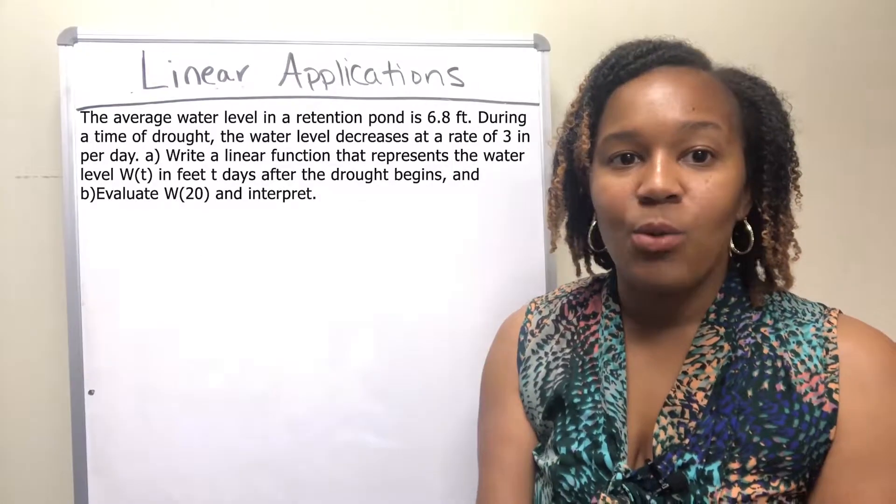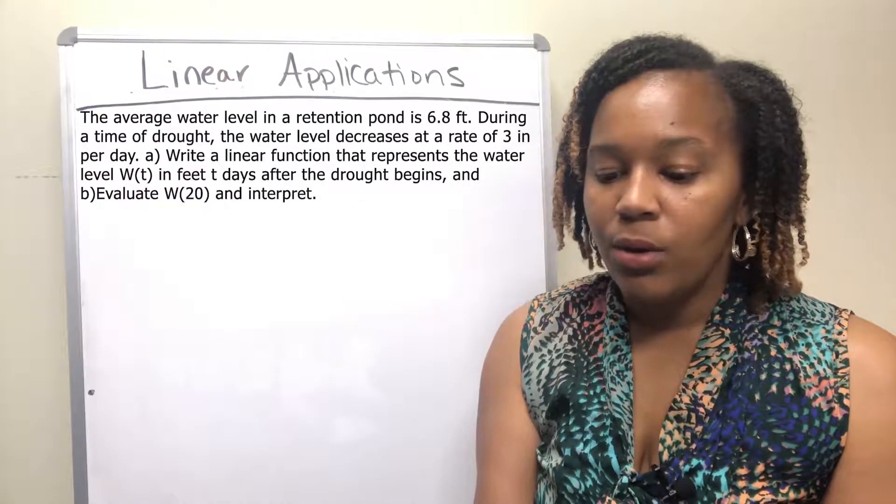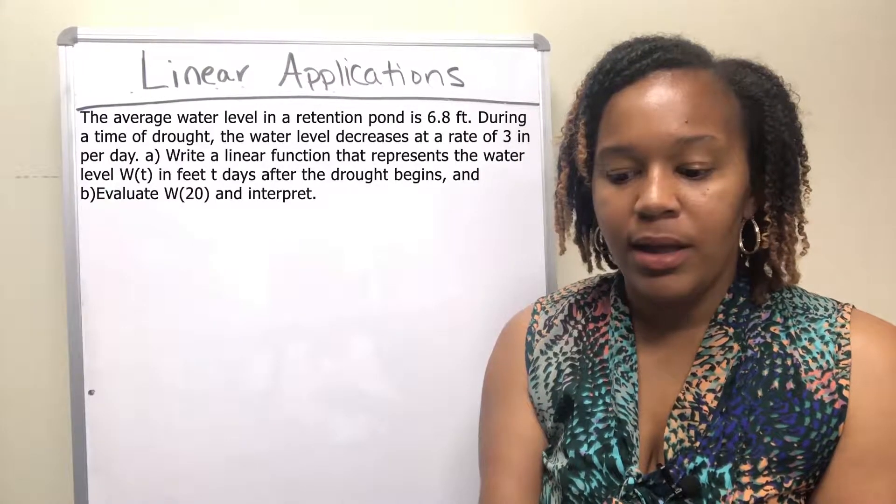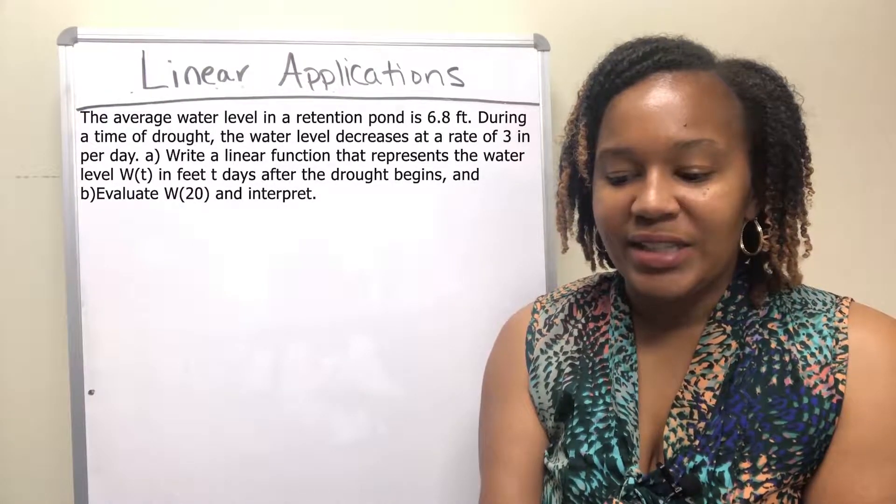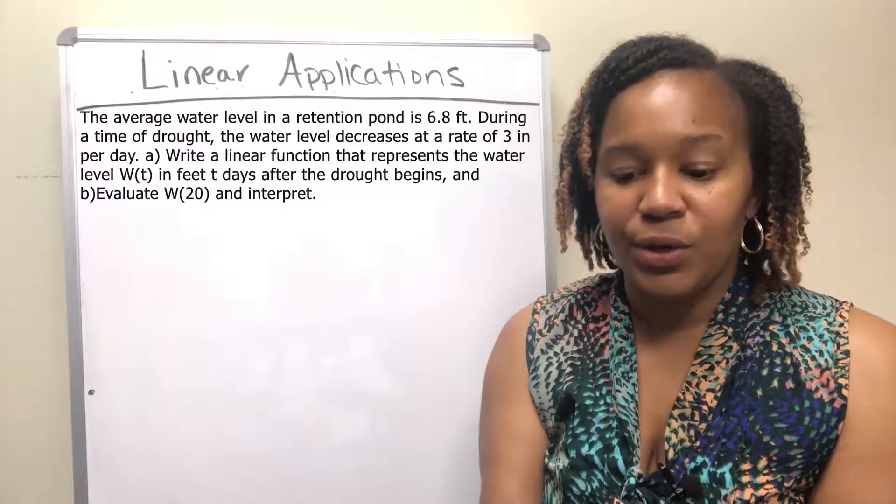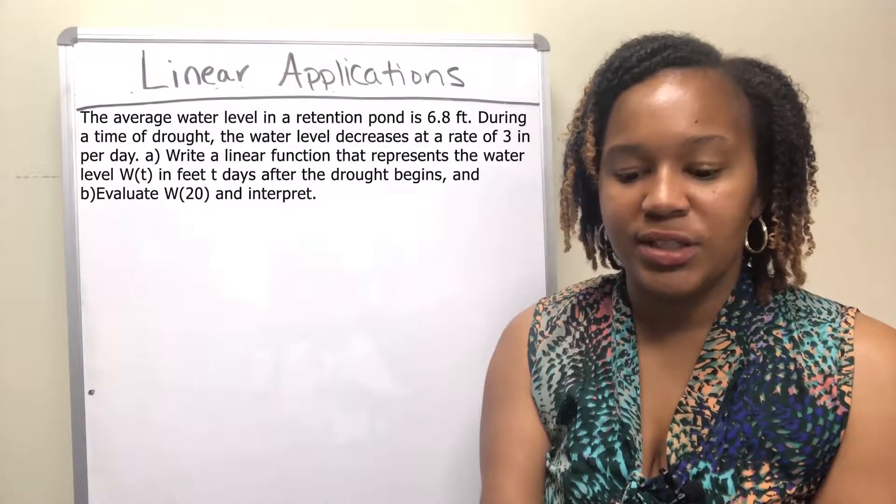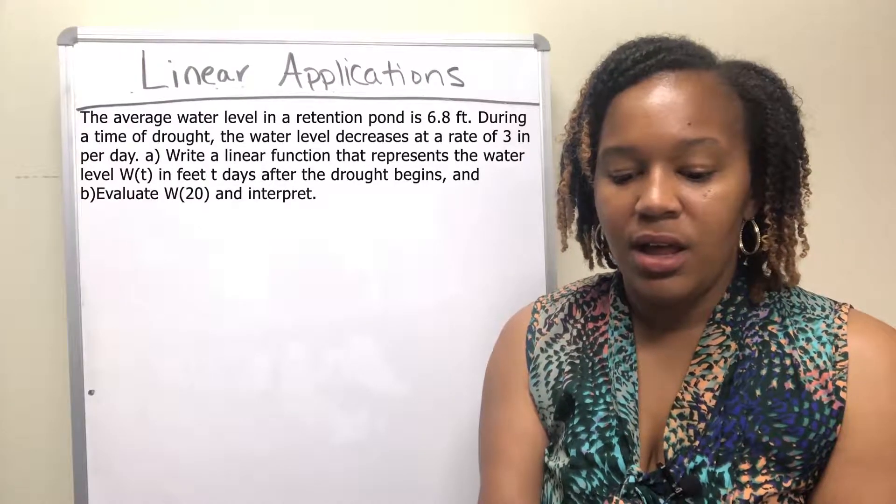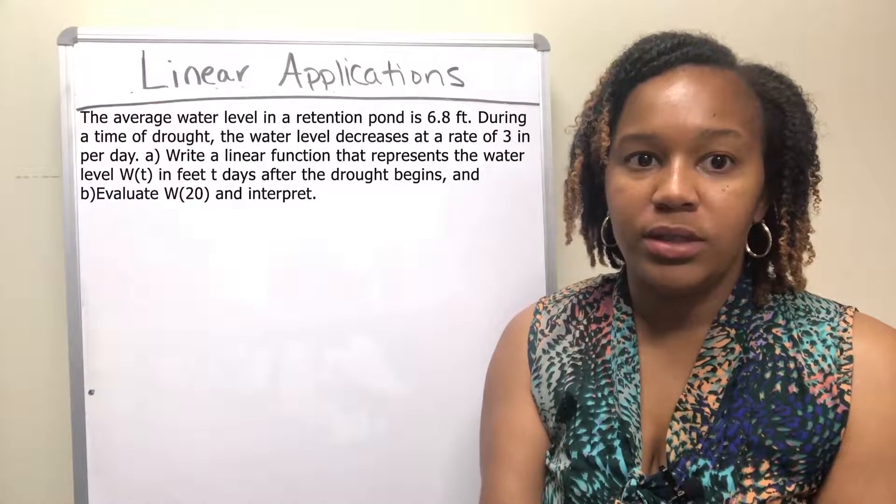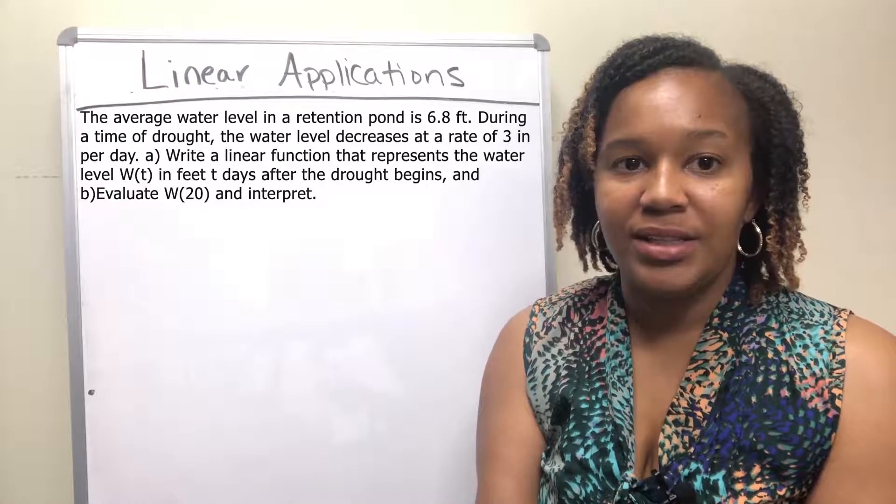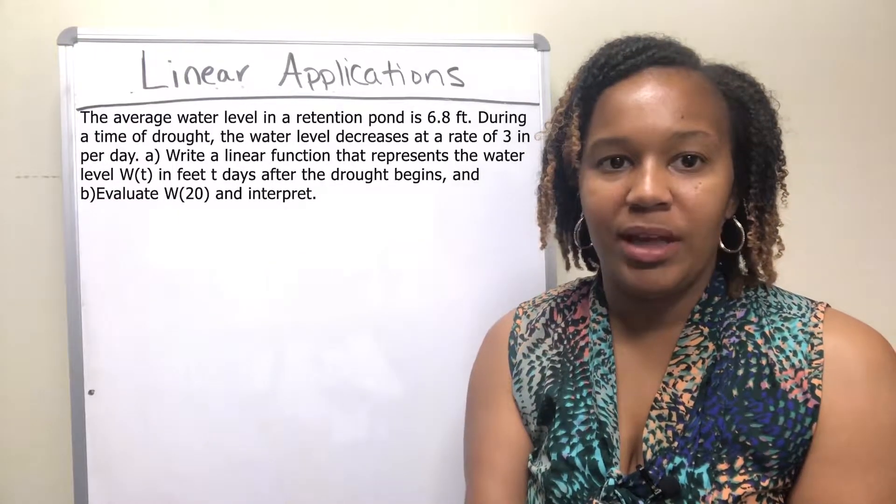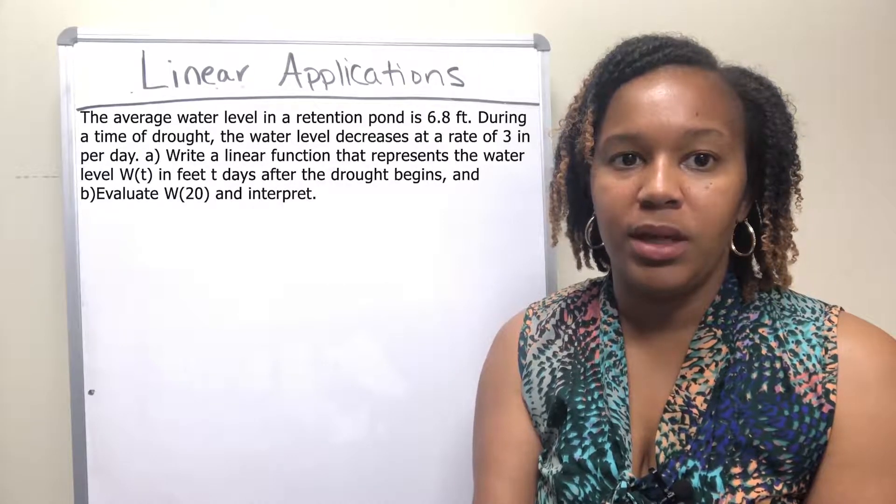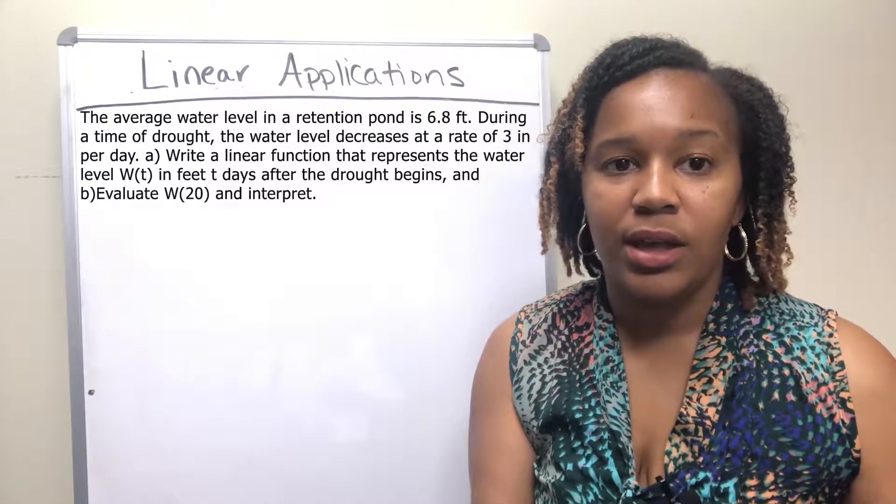Okay, so now I want you to try this one. It says the average water level in a retention pond is 6.8 feet. During a time of drought, the water level decreases at a rate of 3 inches per day. So I want you to see if you can write a linear function that represents the water level W of t in feet t days after the drought begins. Then I also want you to evaluate W of 20 and interpret what it means.